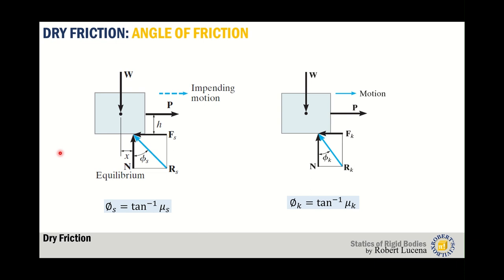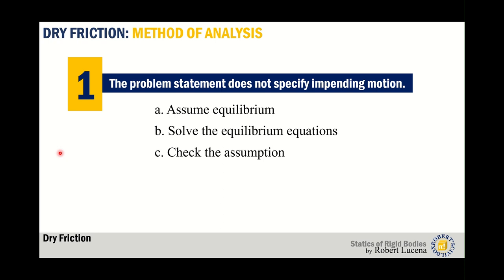Similarly, the angle of kinetic friction is equal to the inverse tangent of μk. When applying these theories to structures, the first case is when the problem does not state whether the object is impending or not. The procedure is: first, draw the free body diagram and assume equilibrium. It is very important to draw the free body diagram before proceeding with any calculation, as it shows all the forces involved in your analysis.